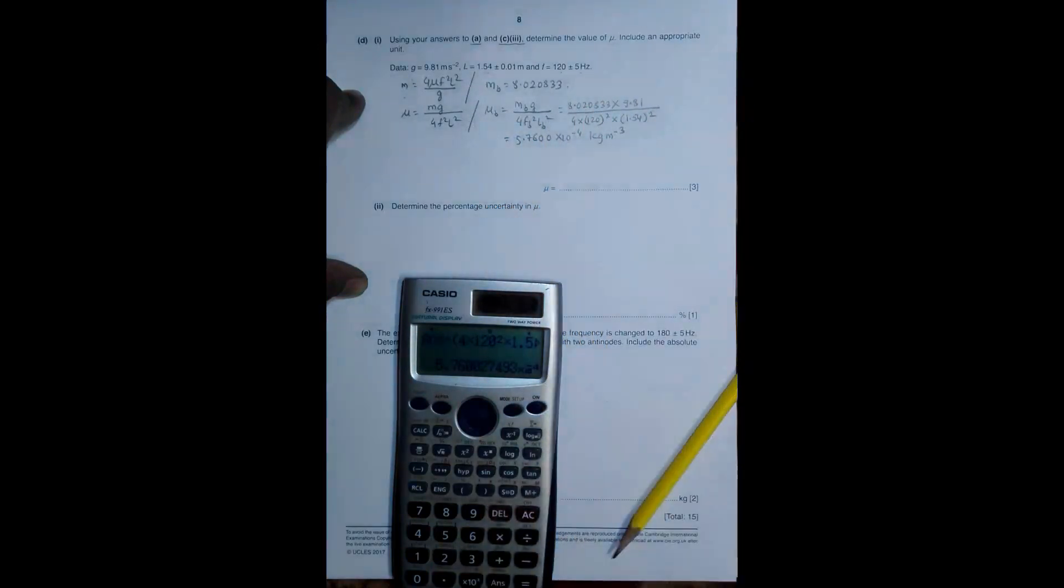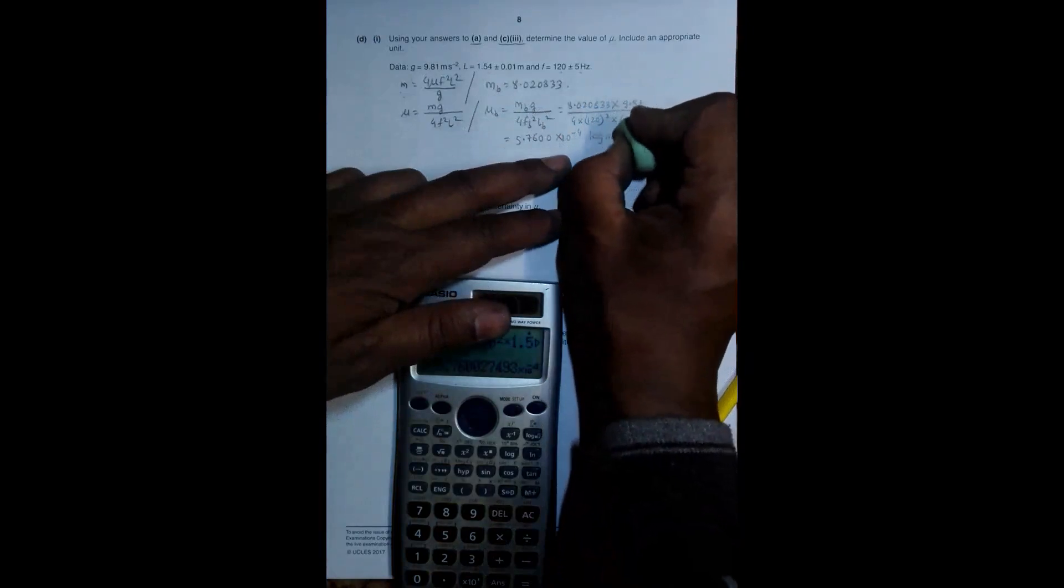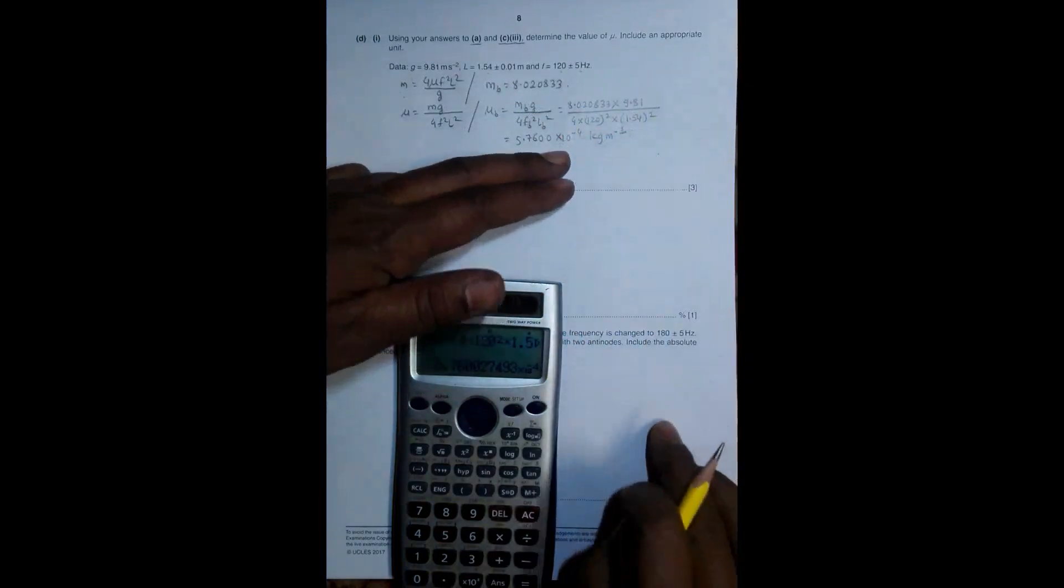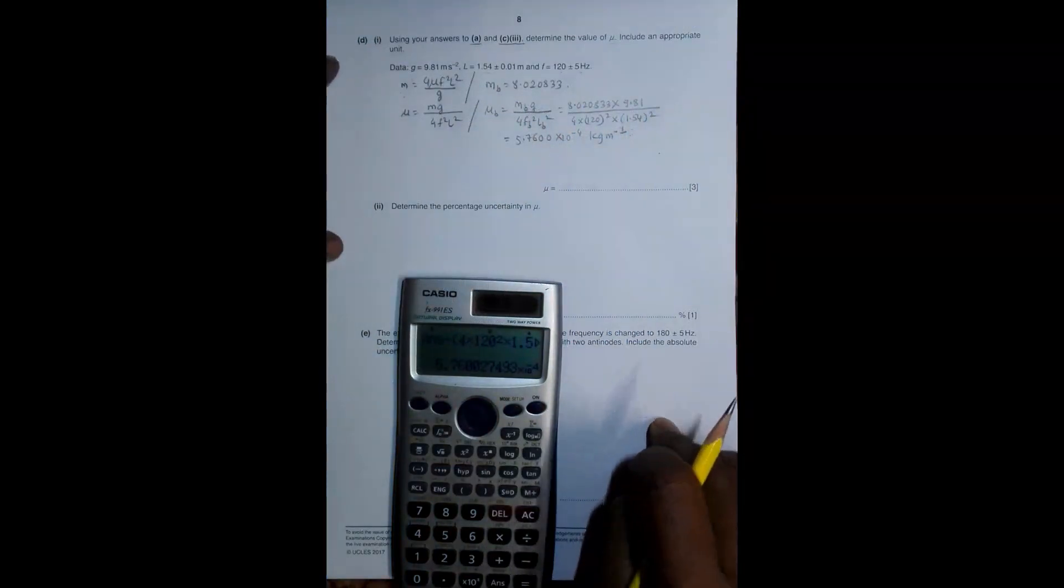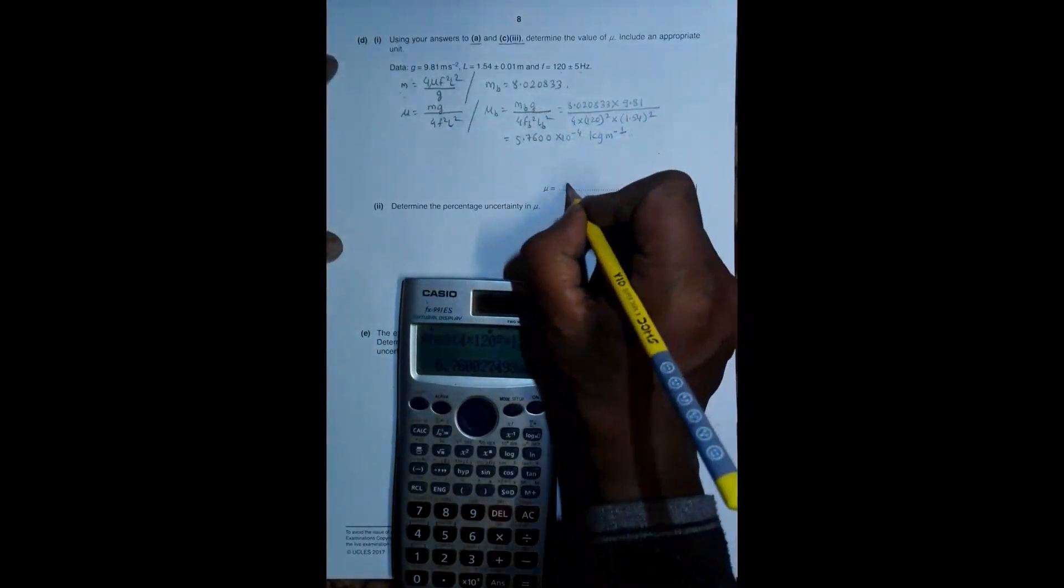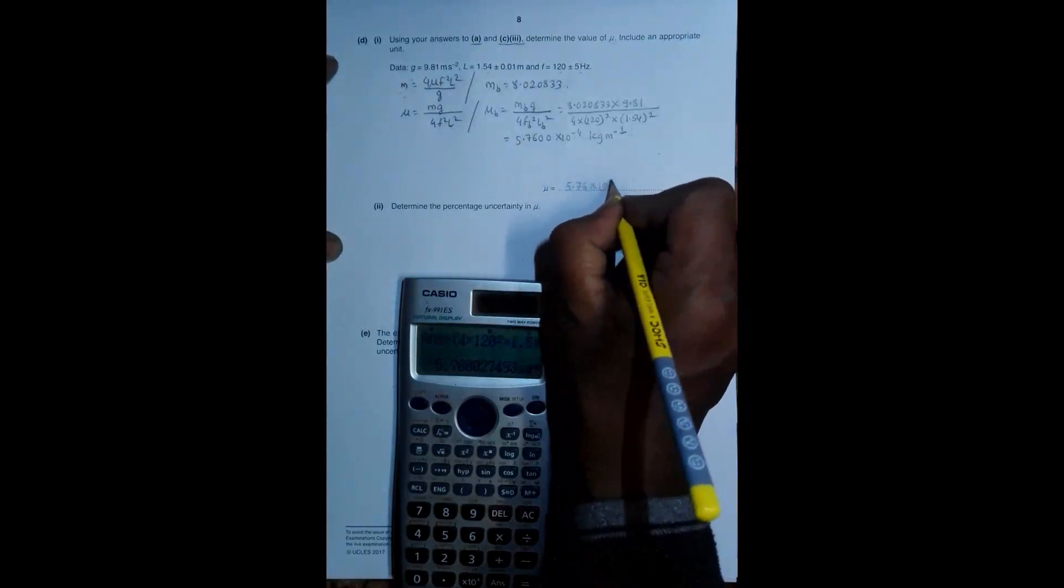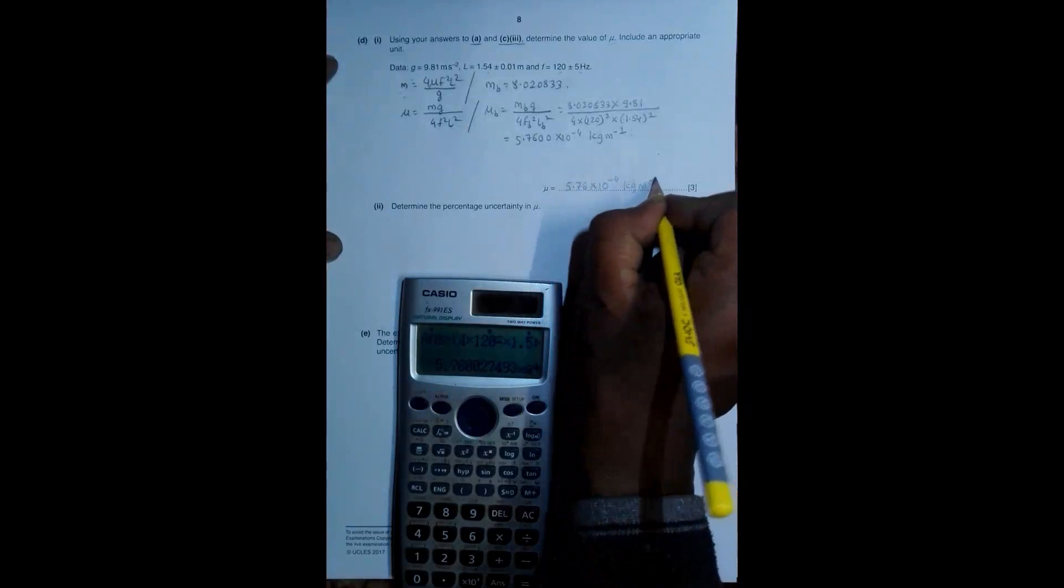So it is, since it is mass per unit length, the SI unit should be equal to kg per meter. So when I write 3 significant figures, appropriate number of significant figures, 5.76 into 10 to minus 4 kg per meter.